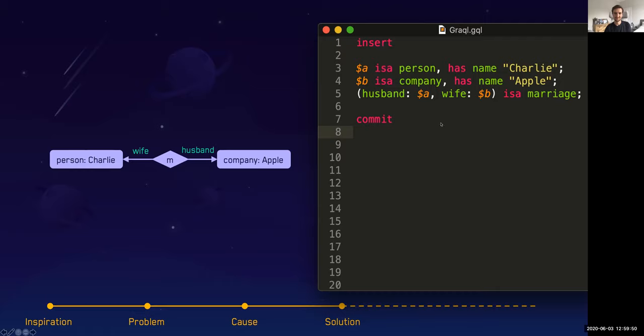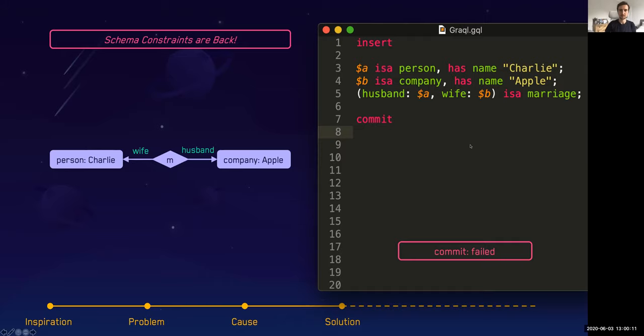In this case, a person cannot marry a company, so this would fail. That's something that we are quite adamant about—we introduce schema constraints back. We maintain logical integrity of your data at the database level. It doesn't have to be implicit somewhere in your application layer, for example.